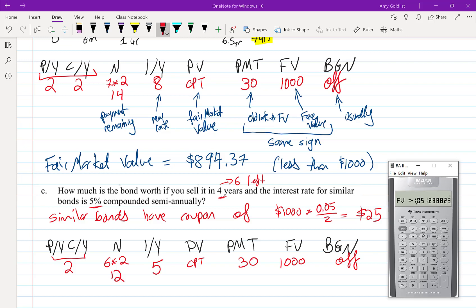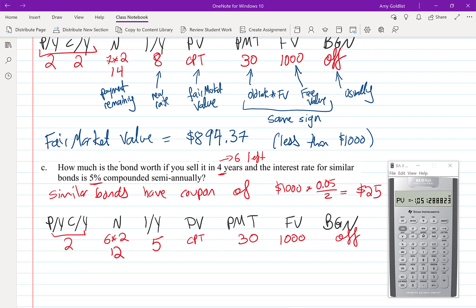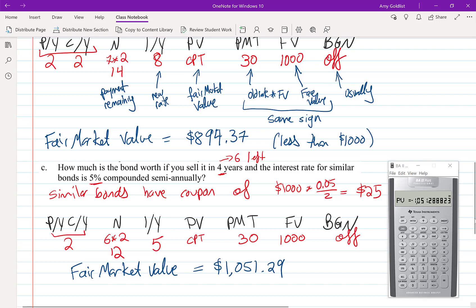Now I'm just going to recompute that present value and I find out that the fair market value has gone up—it's actually $1,051.29, which makes sense. We've locked in at a higher rate, and that makes it more valuable than bonds that are selling right now.